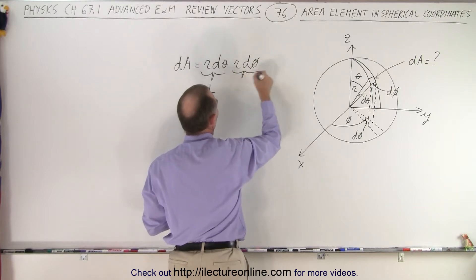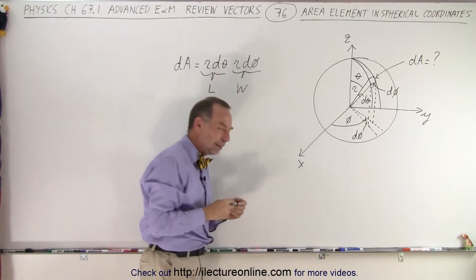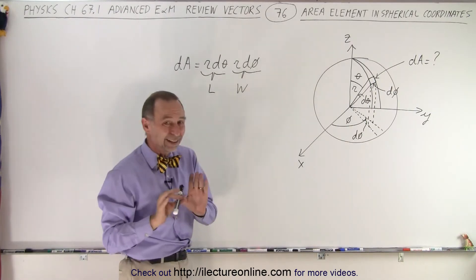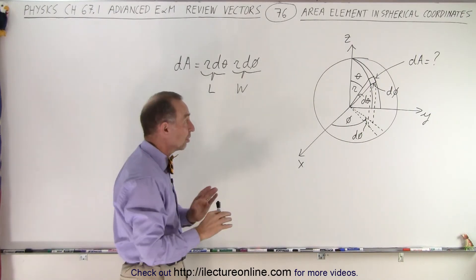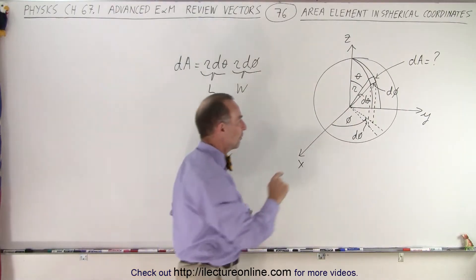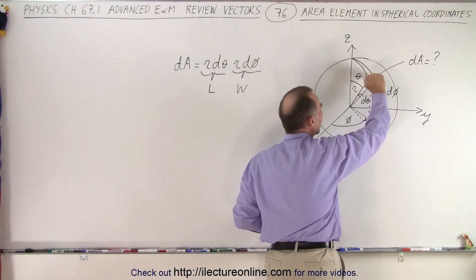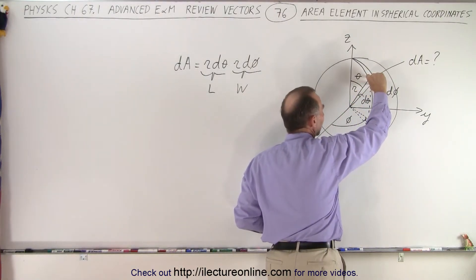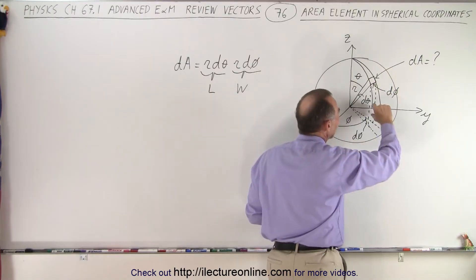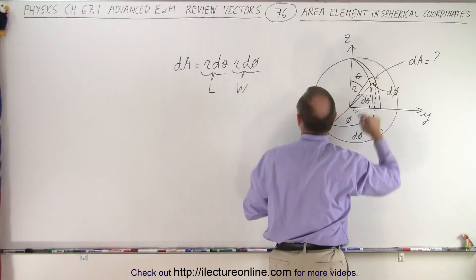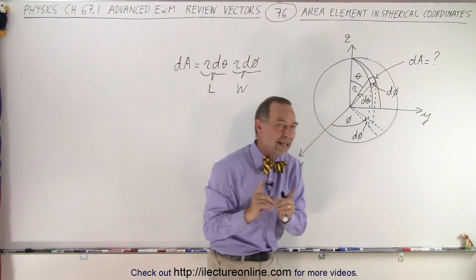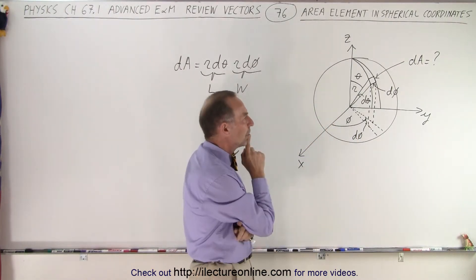That would be the width of the rectangle, but that's not the whole story — this is where it gets a little bit strange. It turns out that's only the case in a very specific situation: that's if the area element dA is along the xy plane. That's when the area element is exactly equal to r·dθ times r·dφ, but that's only the case on the xy plane.